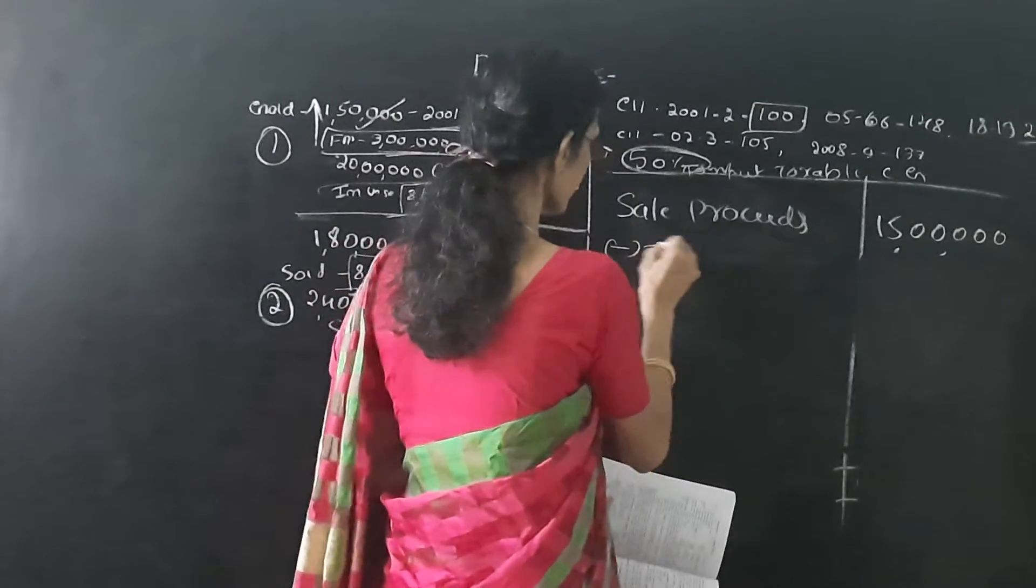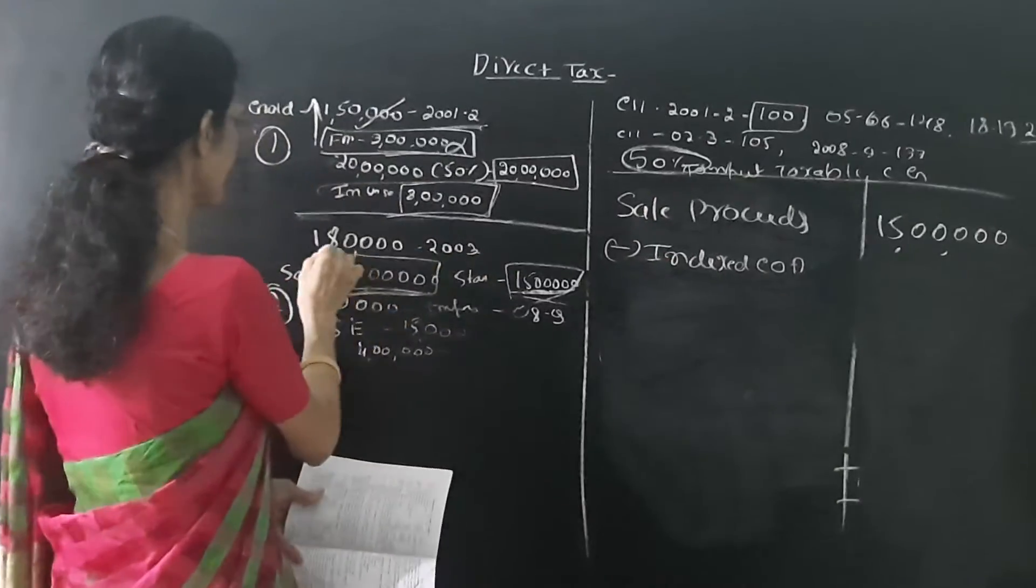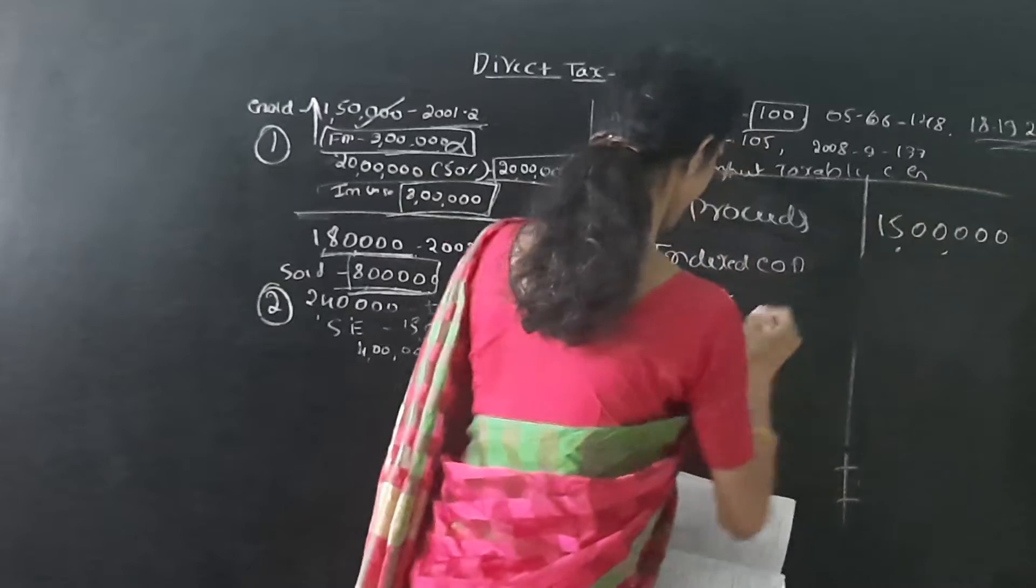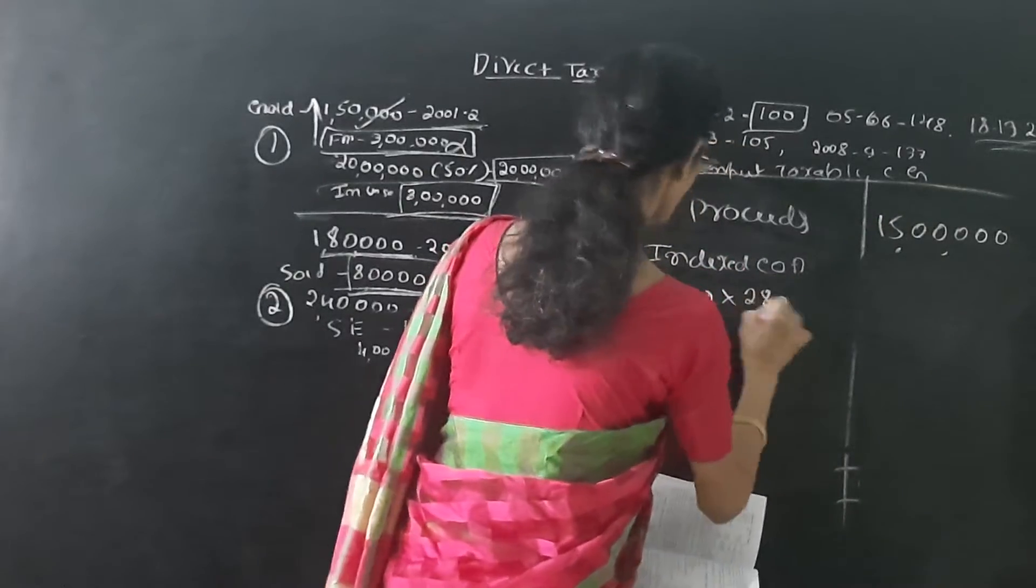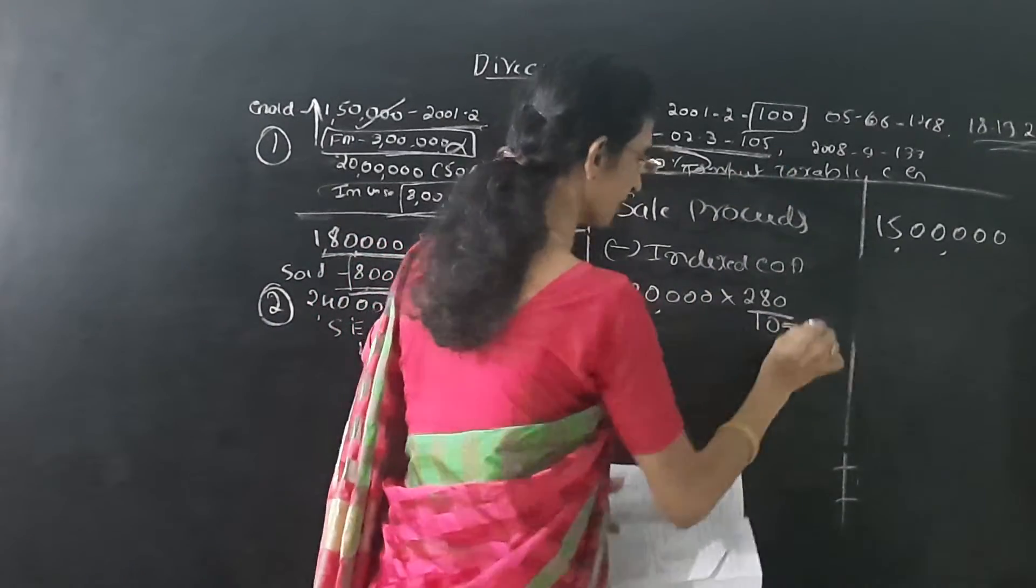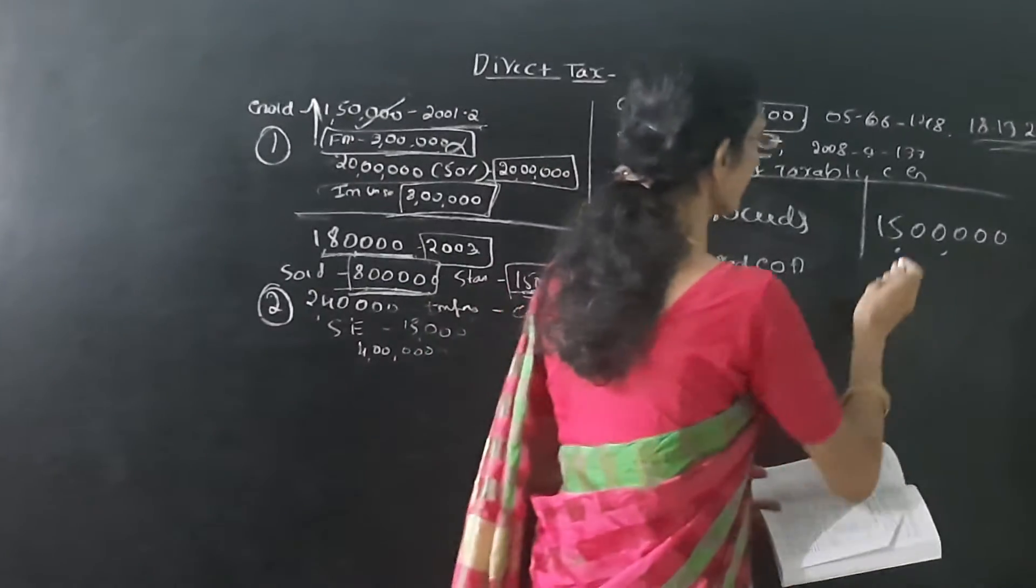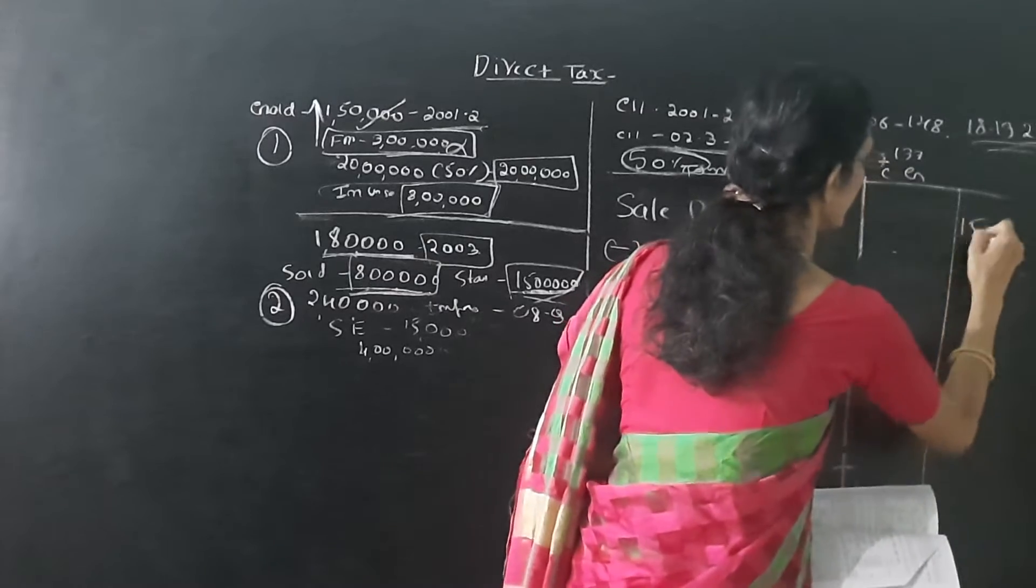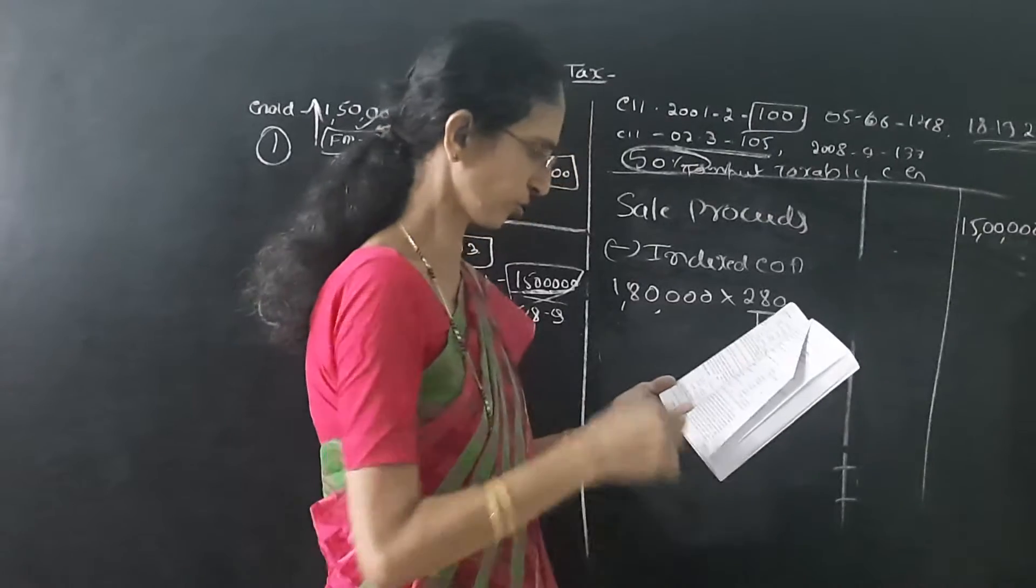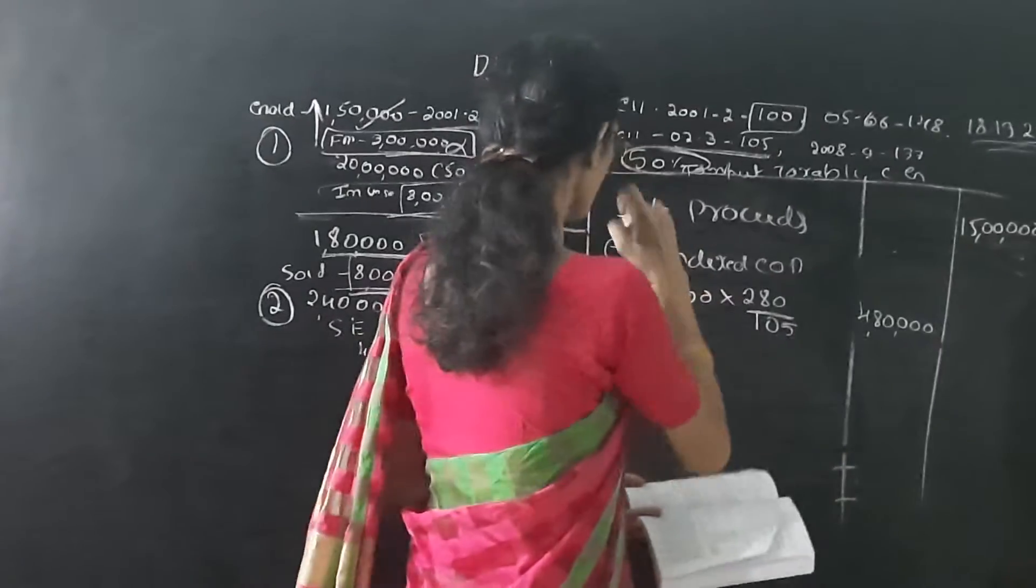It is long term. So we have to take the indexed cost of acquisition. He is purchased for 1,80,000 and sold this year. That means 18-19 the value is 280. It is year 2003. So 2002-3 index is 105. We get 4,80,000.